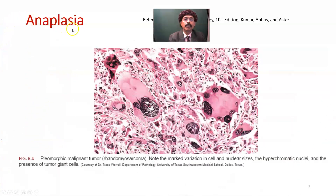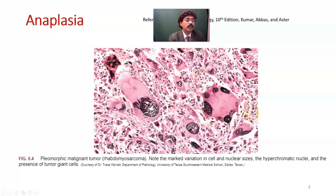If you look at anaplasia, here is rhabdomyosarcoma — the malignant tumour of the skeletal muscle. What you see is marked variation in cell and nuclear size; cells of different shape and size; hyperchromatic nucleus — we are seeing the darkening. And the presence of tumour giant cells. This is a tumour giant cell. It is formed by the fusion of macrophages or monocytes. We will get tumour giant cells in anaplastic malignant tumours.